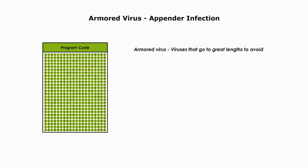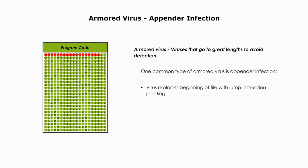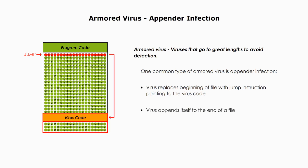An appender virus infection is one common type of armored virus infection, and this type of virus infection is very simple in terms of structure. An appender virus replaces the beginning of the file with jump instructions pointing to the virus code, and appends itself to the end of a file — that's why it's called an appender. Once the program starts, it jumps to the virus code.